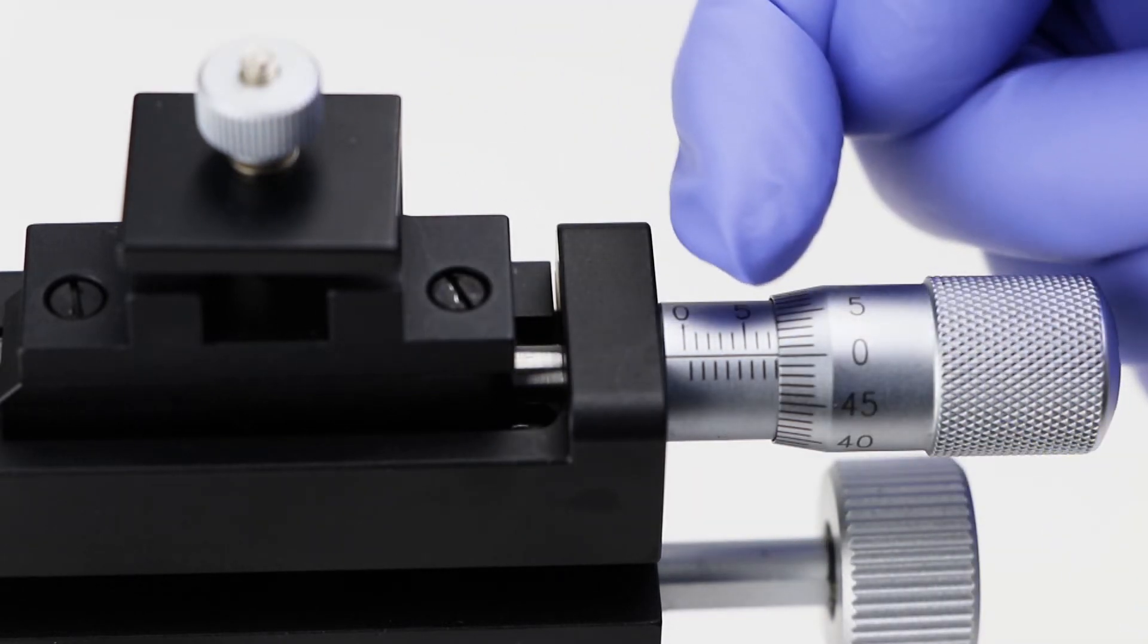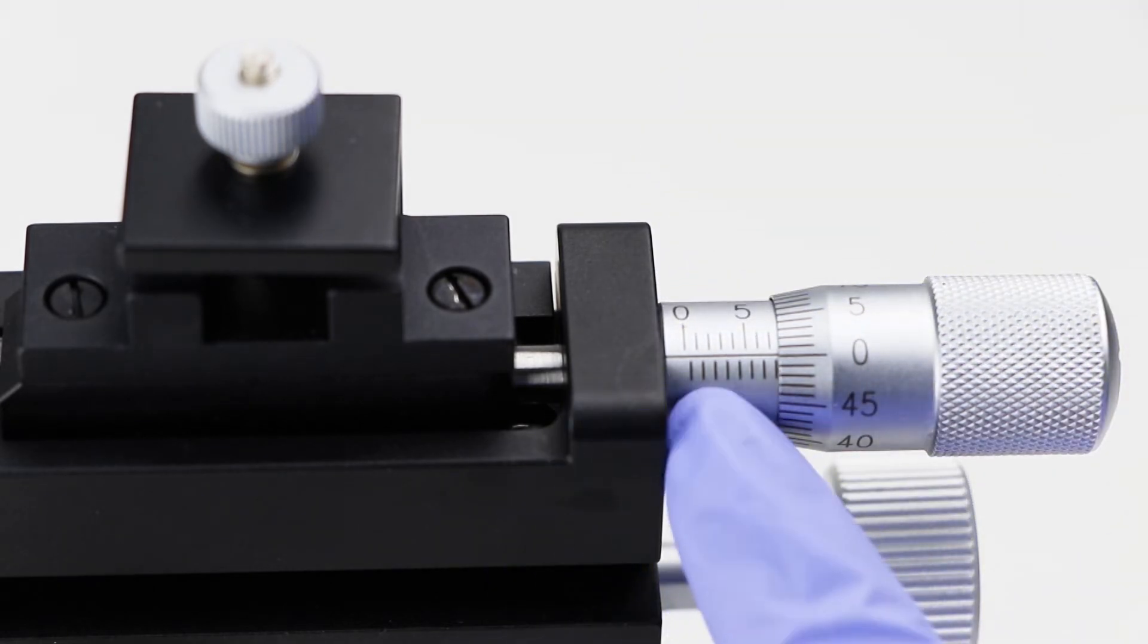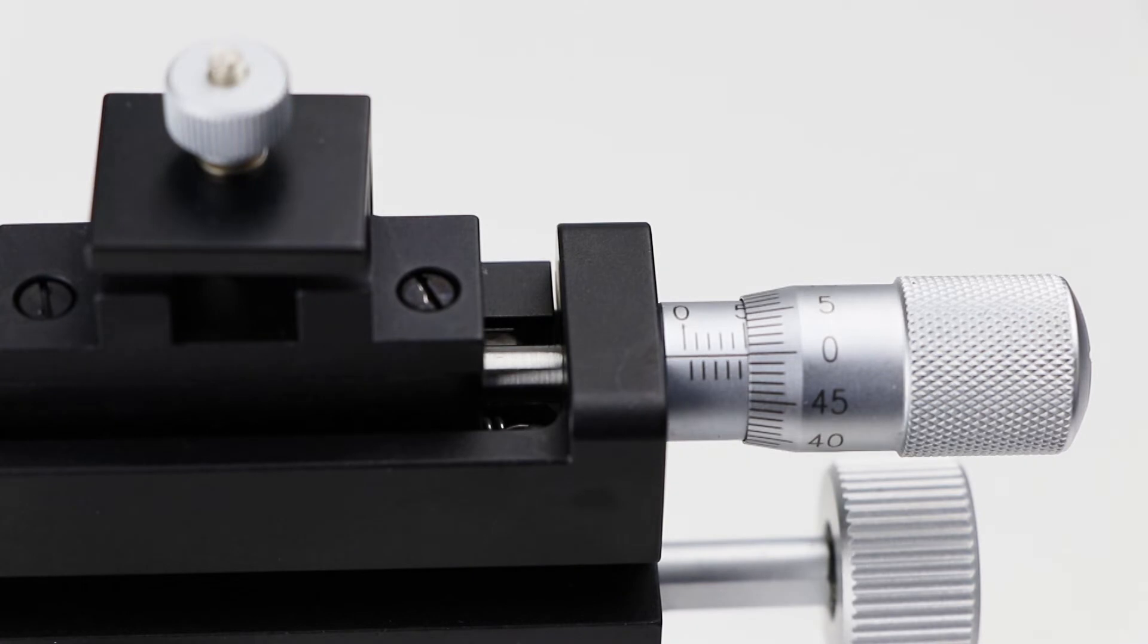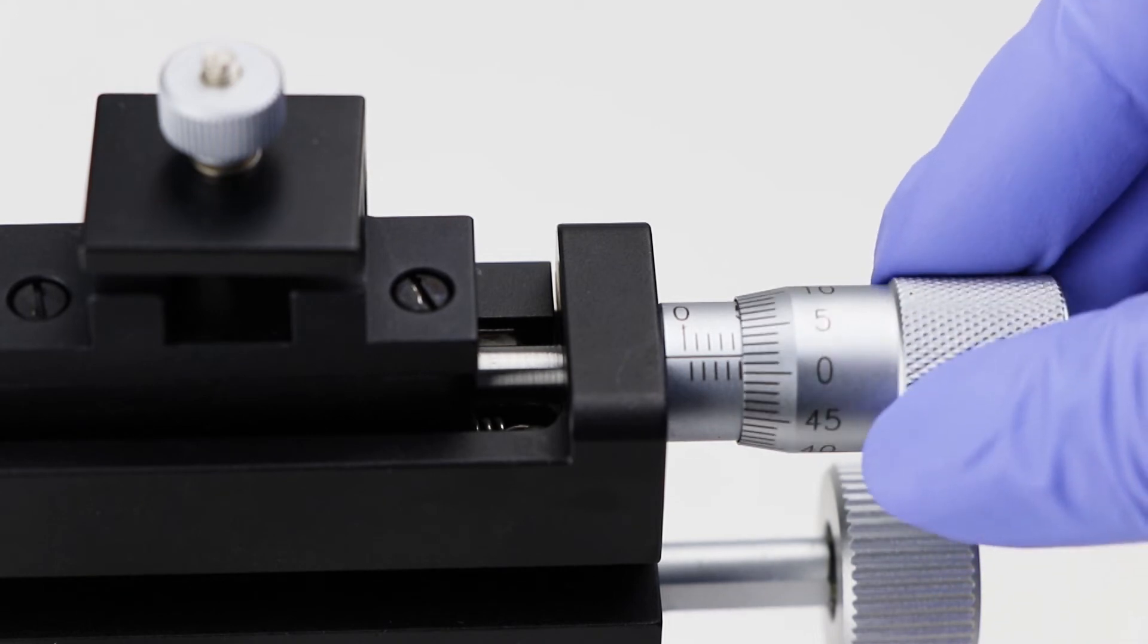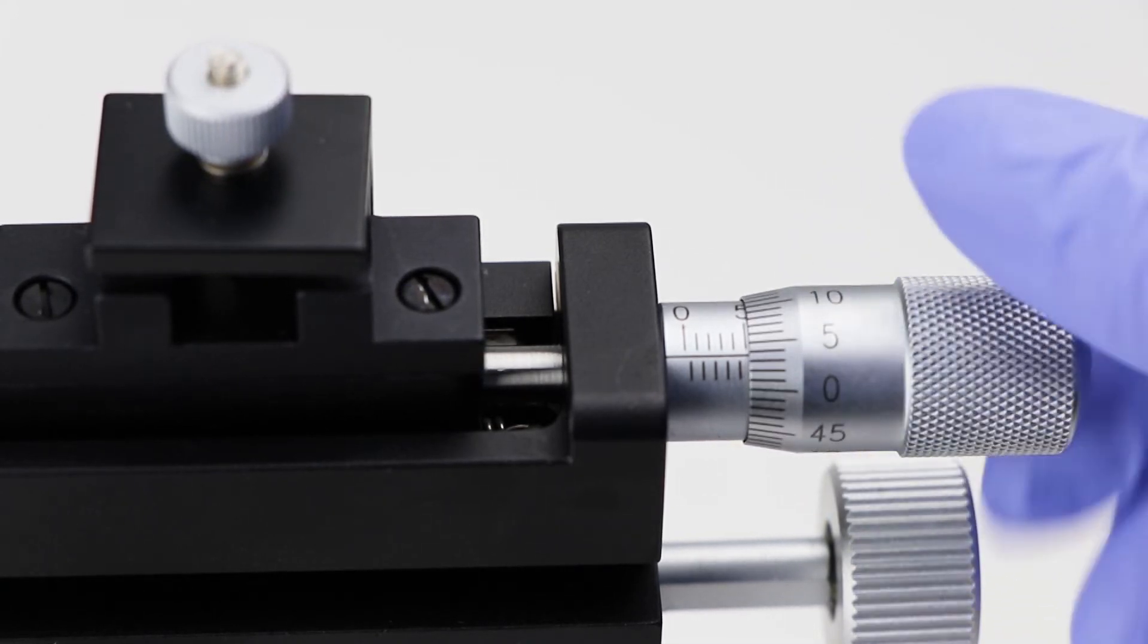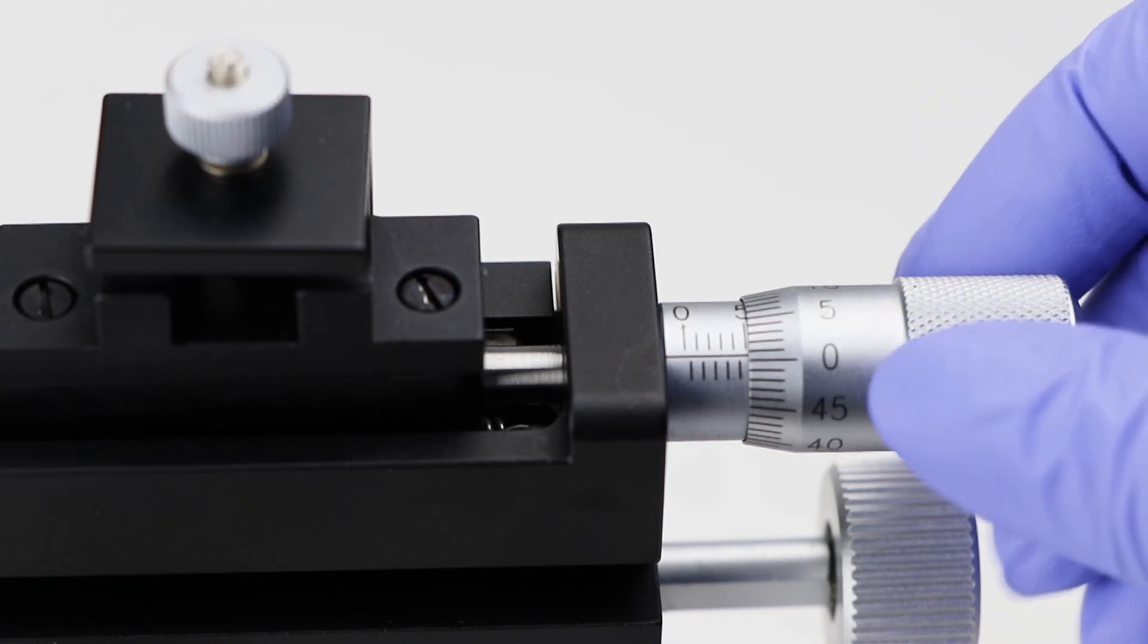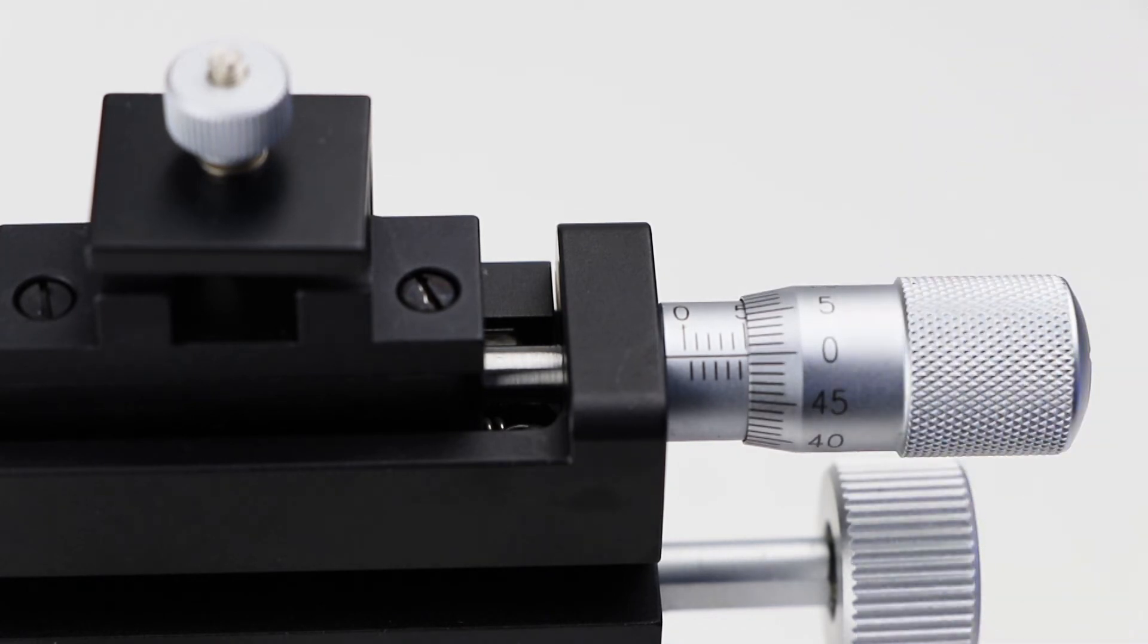The linear scale is read first. Whole numbers are shown on the top of the linear scale, and half numbers are shown on the bottom. In this case, we see the 5.0 millimeters. Then, we read the rotational scale, which has 50 increments. For this instrument, two complete revolutions of the rotational scale equals 1.0 millimeter mark on the linear scale. This means that each mark on the rotational dial is equivalent to one one-hundredth of a millimeter.